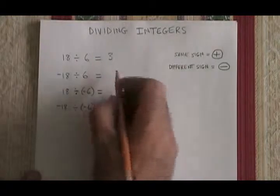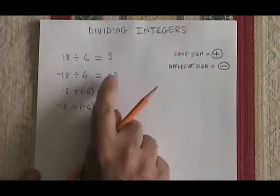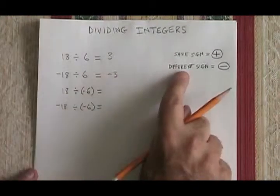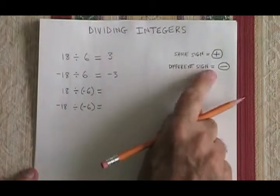Negative 18 divided by 6, though, is equal to negative 3. How do I know that? Because when you have different signs in a division, the answer will always be negative.